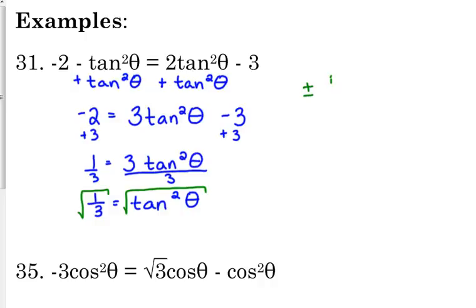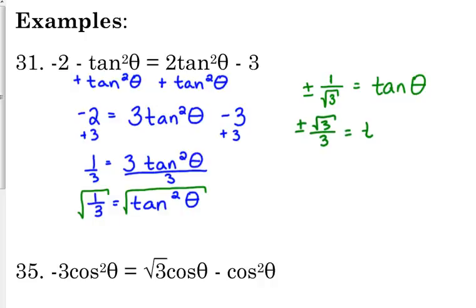The square root of one is one. We can't take the square root of three as a whole number, so that means we need to rationalize. When we rationalize one over the square root of three, you should be pretty used to this one by now — it's the square root of three over three.